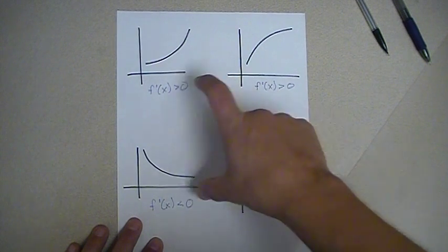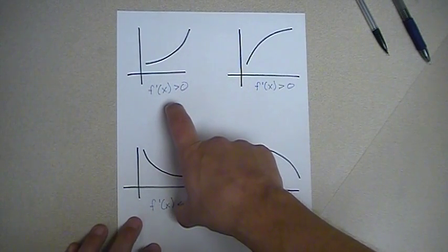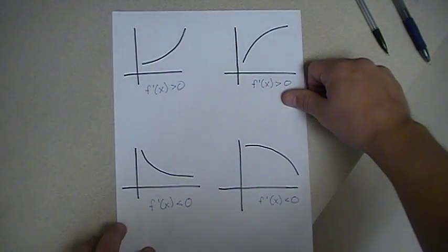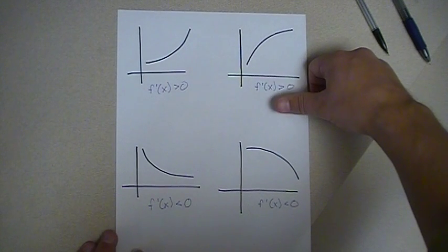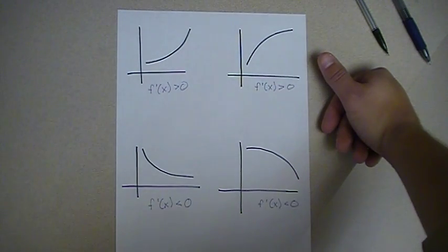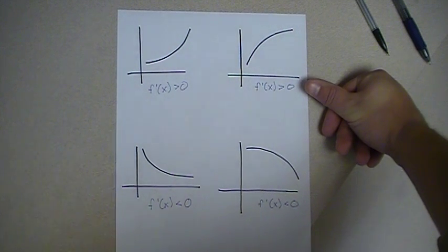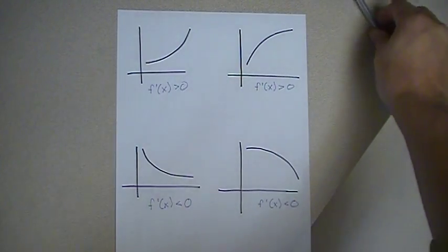If you look at these two graphs, I want to think about the second derivative of them. The second derivative is the rate of change of the first derivative, because the second derivative is just the derivative of the first derivative. So one more time: the second derivative is the rate of change of the first derivative.